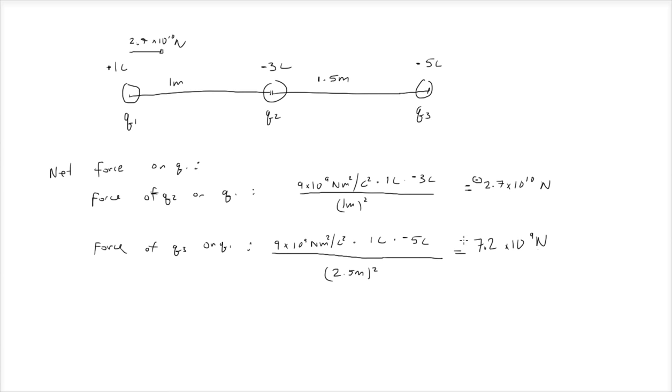Again, we'll have a negative sign here. You'll see that they're going to be in the same direction. The arrow is smaller than the other one: 7.2 times 10 to the 9 newtons.